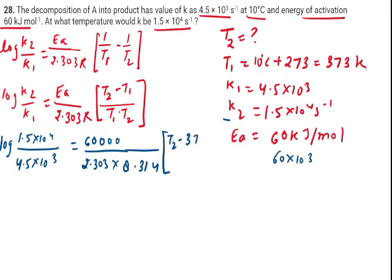T2 is unknown. T1 is 373. We need to find out T2.